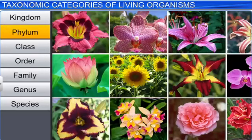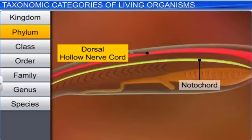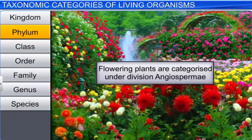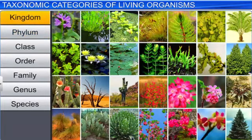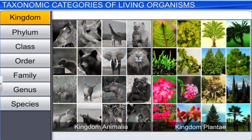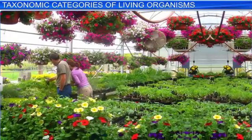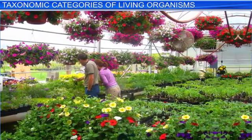Phylum, or division, is the next category. Animals like fishes, amphibians, reptiles, birds, and mammals have common features like the presence of notochord and a dorsal hollow neural system, and are thus categorized as Phylum Chordata. Similarly, all flowering plants are categorized under the division Angiospermae, or Magnoliophyta. The highest taxonomic category is Kingdom. All animals are put under Kingdom Animalia and all plants fall under Kingdom Plantae. So, as we go higher from species to kingdom, the number of common characters goes on decreasing. Thus, by observing the characteristic features of an individual organism, taxonomists have classified living organisms into different taxonomic categories.